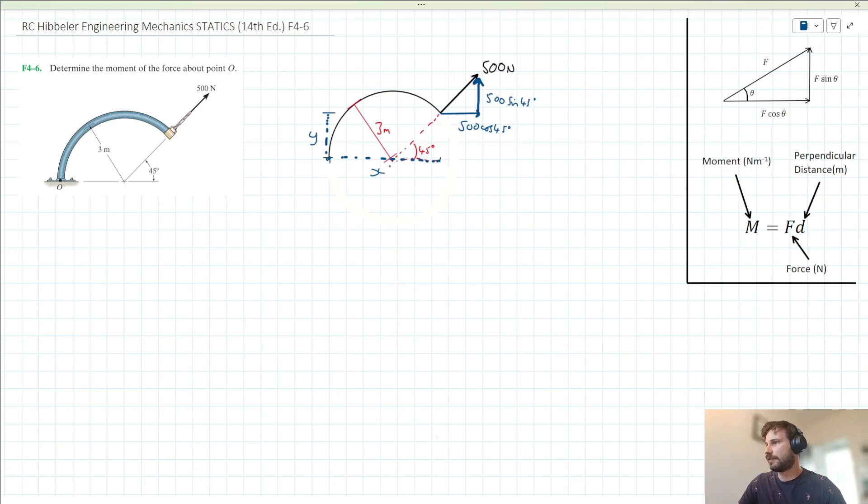So we know we'll have a 3 meter length here, and here we're going to have a 3 cos 45 length. So we can say that x is equal to 3 plus 3 cos 45, which when we put into our calculator gets us a rough value of 5.12.